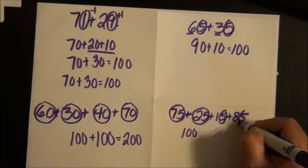But as you get better at these, you'll start seeing those same problems. So anyway, that one is making hundreds. You make 100 and then you add the rest.